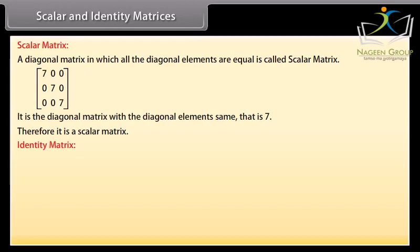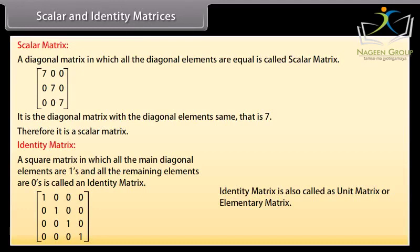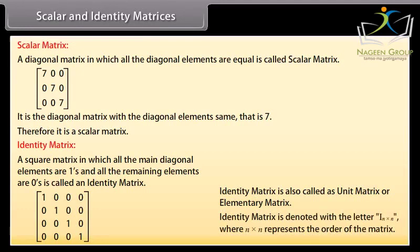Identity matrix: A square matrix in which all the main diagonal elements are 1s and all the remaining elements are zeros is called an identity matrix. Identity matrix is also called as unit matrix or elementary matrix. Identity matrix is denoted with the letter N by N, where N by N represents the order of the matrix.